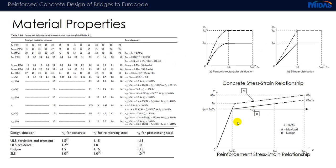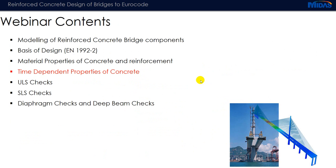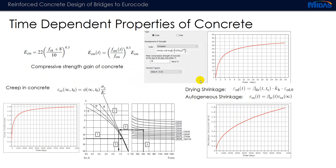For reinforcement, the same curve given in Eurocode 2 is followed, which is an idealized bilinear elastoplastic model. Time-dependent properties are very important for reinforced concrete design. We need to make sure the correct age of concrete is defined in the construction stages and that creep and shrinkage properties and the compressive strength gain of concrete are entered correctly.